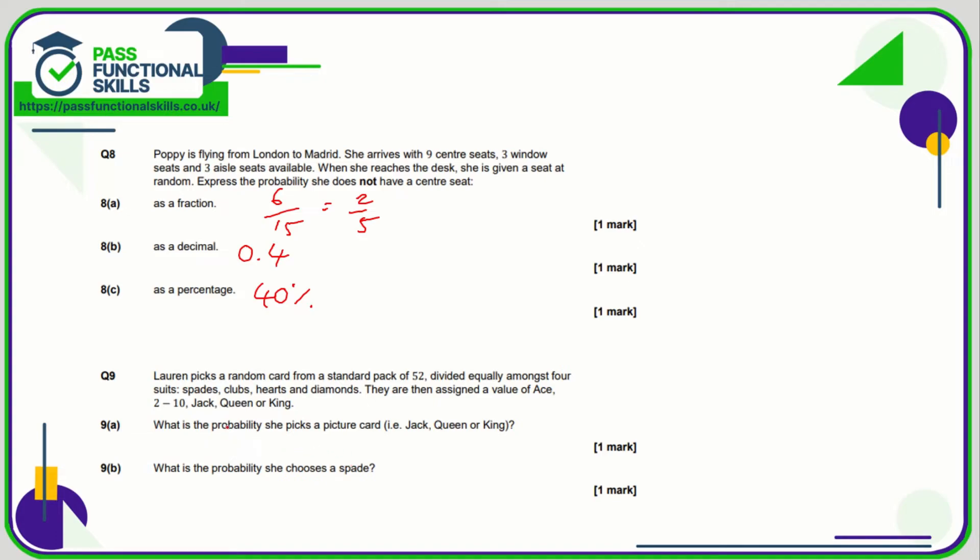So in a pack of cards, we know that there are 52 cards in total. There are four suits—spades, clubs, hearts, and diamonds—so there's a jack of each, a queen of each, and a king of each. So in total there's 3 times 4, which is 12 face cards. And 12 out of 52 can be simplified to 3 out of 13.